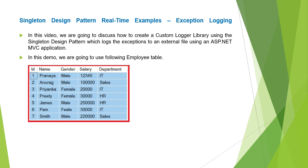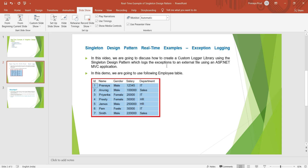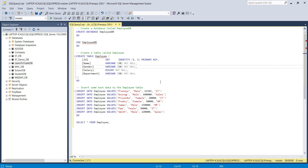In this video, we are going to discuss how to create a custom logger library using the singleton design pattern, which logs exceptions to an external file using an MVC application. In this demo, we are going to use the following employee table. Let us open SQL Server Management Studio and create the necessary database table with the required data. I have already typed the necessary SQL script.